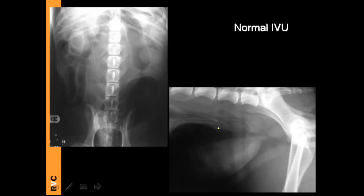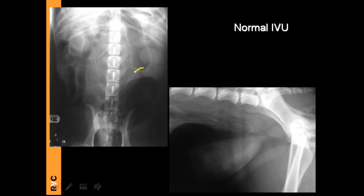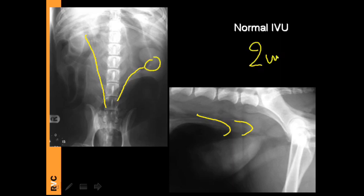With contrast studies such as an intravenous or excretory urogram — injecting contrast into a vein — we can see the kidneys immediately and at 5 minutes, and then follow the ureters as they enter the bladder. This helps identify the renal pelvis and ureters. The key measurement to remember is 2 mm: the renal pelvis should be up to 2 mm in diameter, the ureter up to 2 mm in diameter, and the urinary bladder wall up to 2 mm thick when the bladder is full.